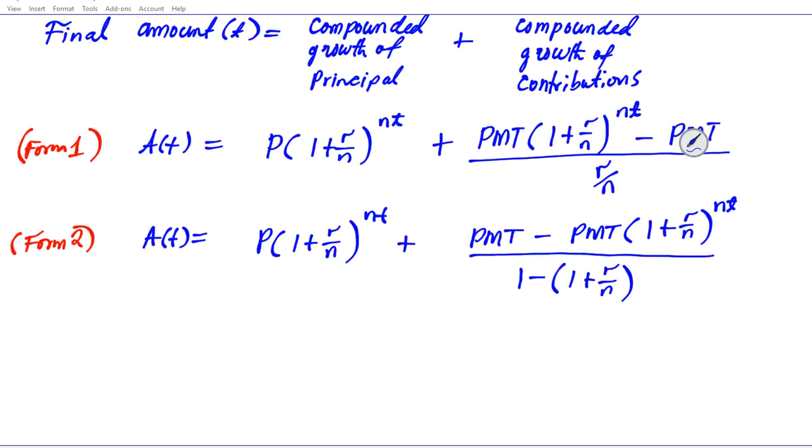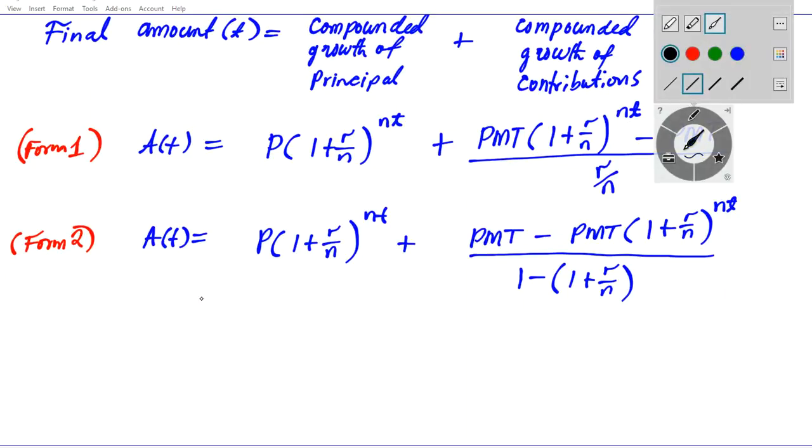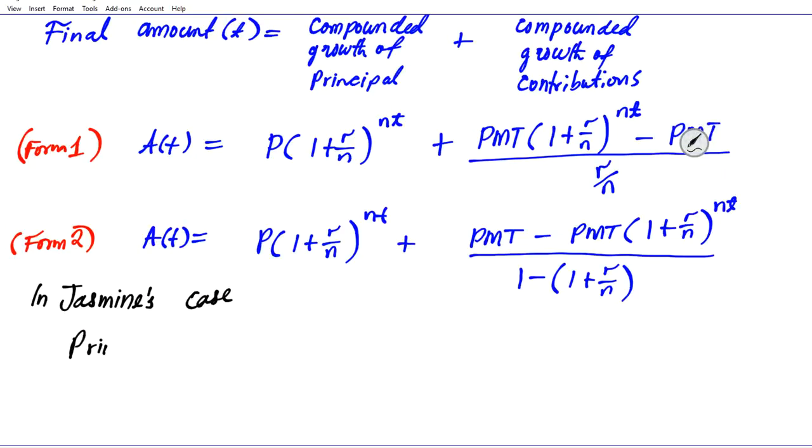In Jasmine's case, let's specify what the variables are. The principal is how much she started with - P = 0. Her interest rate R is 3%, which must be expressed in decimal format as 0.03.